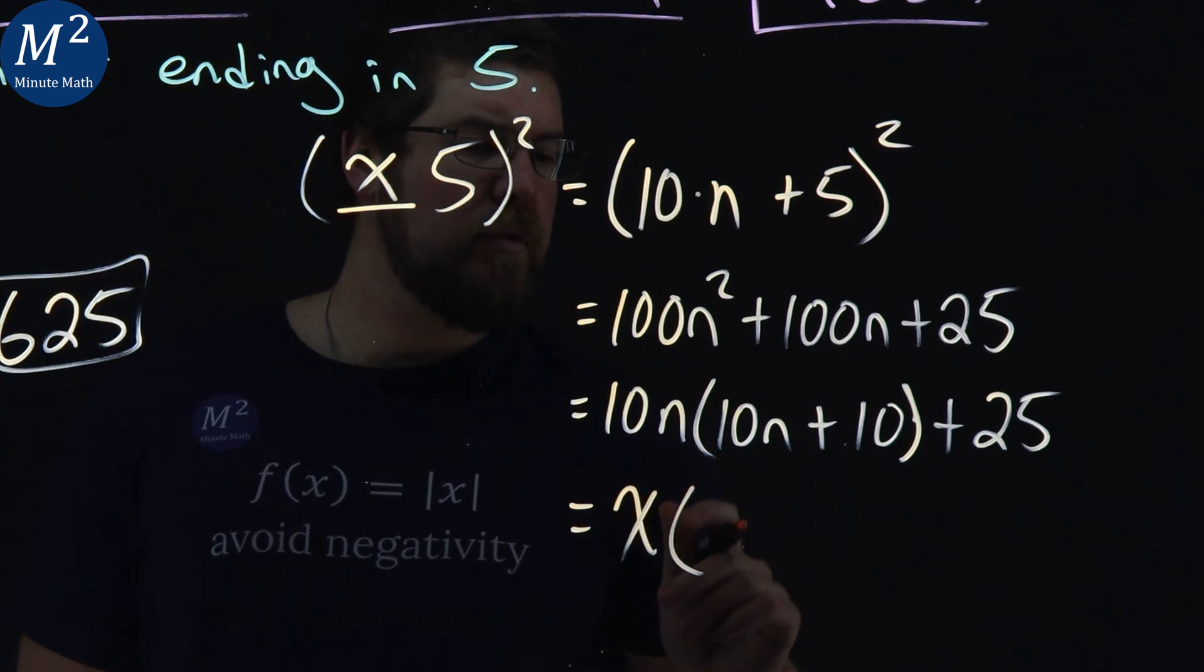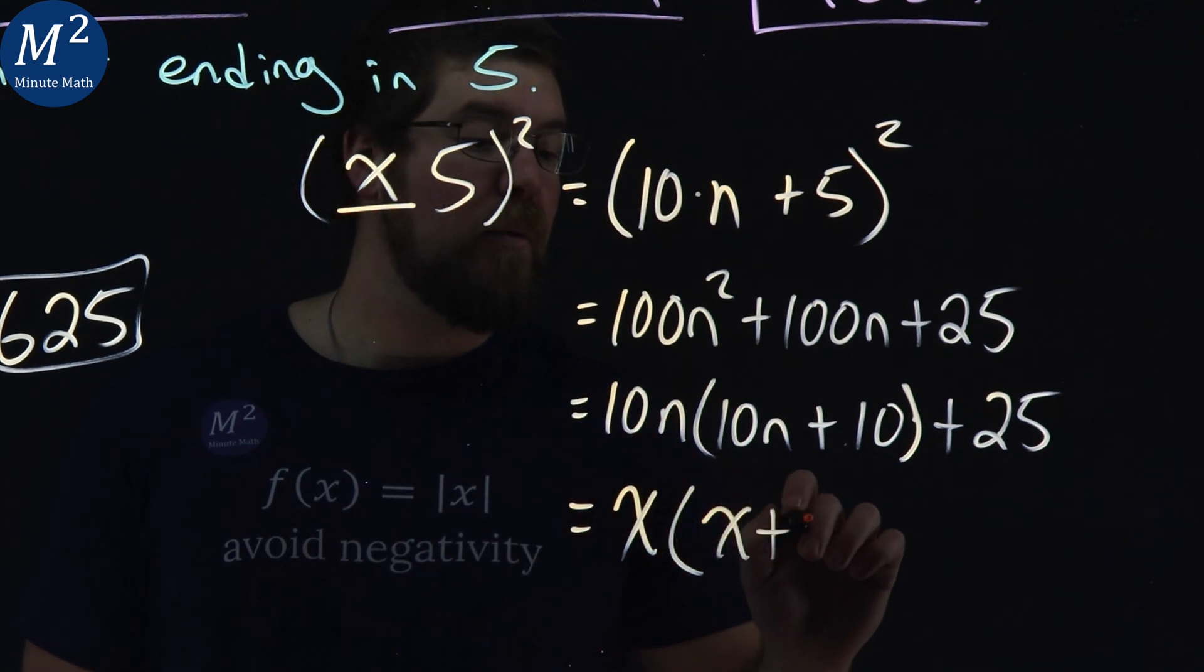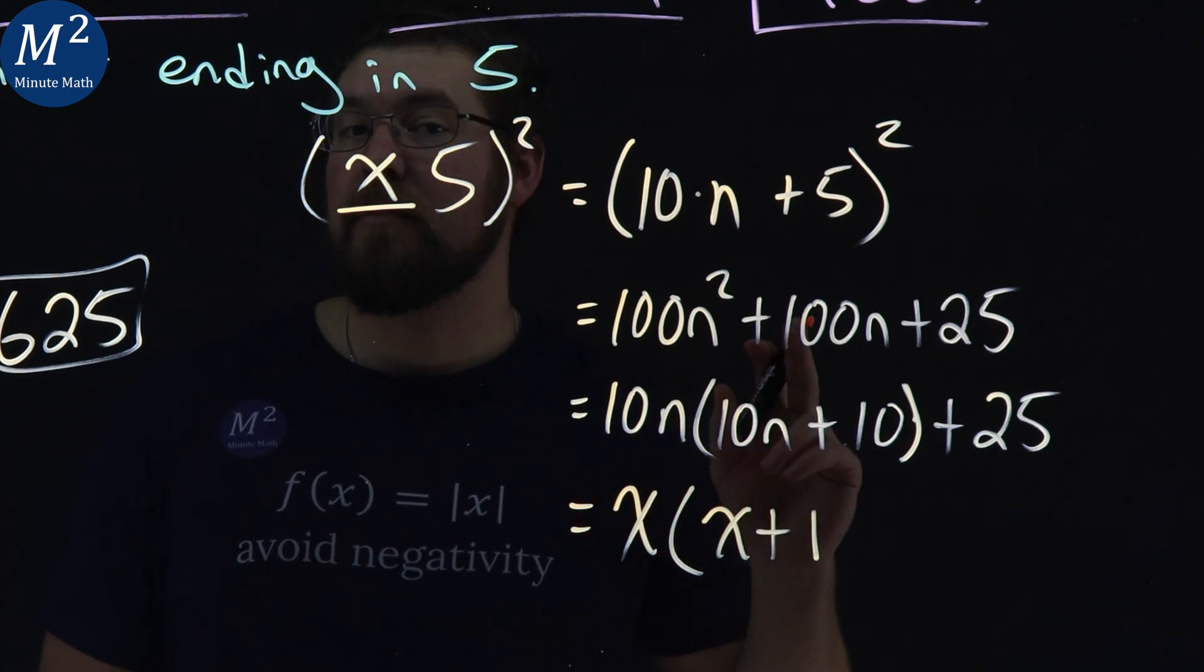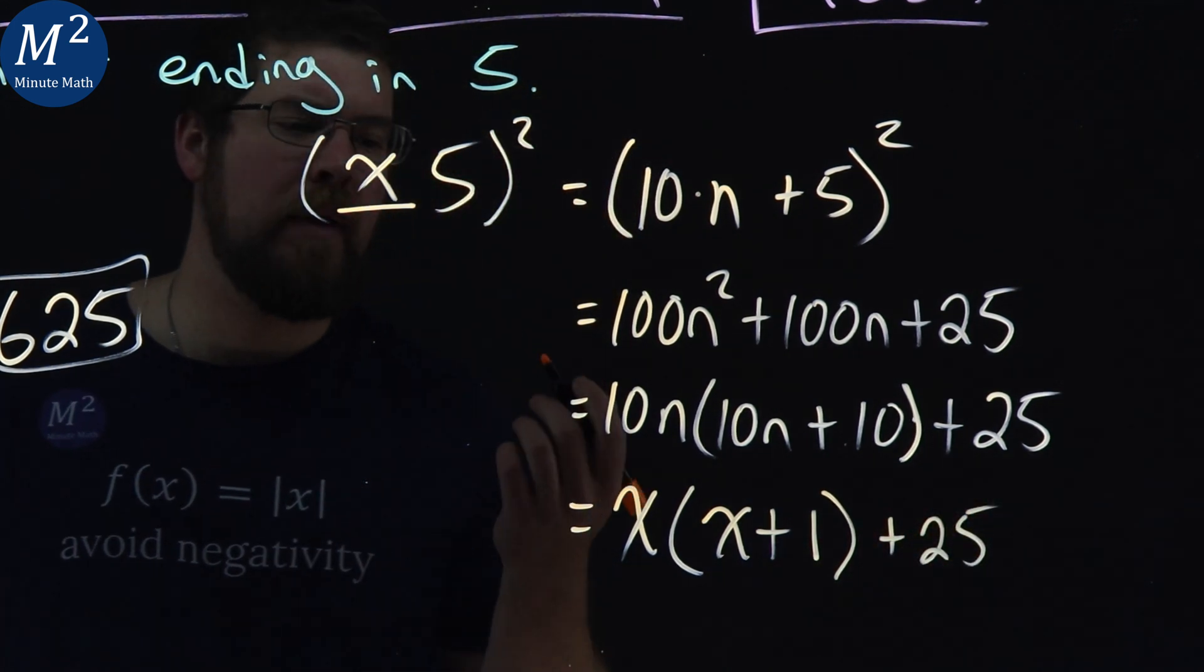So we have an x here multiplied, and if x is 10n, then x plus 1 is 10n plus 10. Then we add a 25, and there we have it.